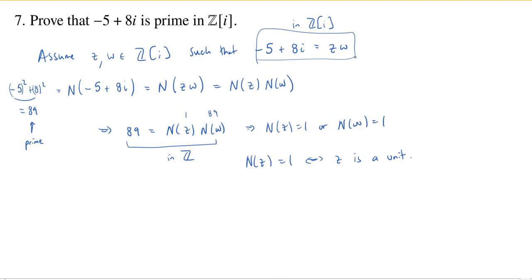So we conclude, if you have a factorization of negative 5 plus 8i, one of the two factors must be a unit. So every factorization of negative 5 plus 8i as a product of two Gaussian integers must contain a unit as a factor. But that's precisely what it means to be prime in the Gaussian integers, i.e., negative 5 plus 8i is prime.